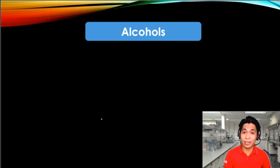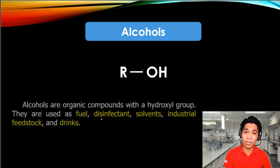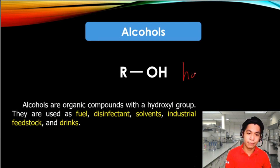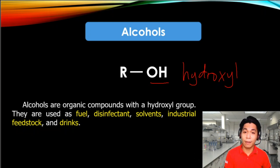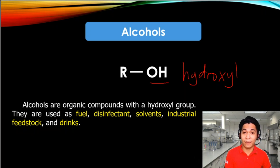The next functional group is the alcohol, with the structure of a carbon bonded to an OH. OH is called the hydroxyl group. So whenever you see a carbon bonded to a hydroxyl group, that is an alcohol as the functional group. We all know that alcohols are mostly used as disinfectants, as solvents, and likewise for beverages.